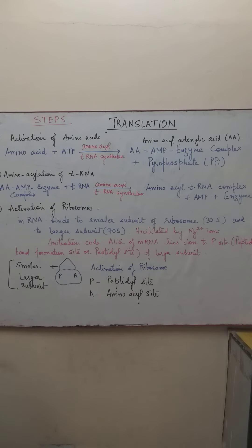We have AMP and enzyme complex plus pyrophosphate. So we call it in short as A-A-AMP enzyme complex. It is formed as a result of the reaction of amino acid with ATP. The amino acid is in activated form.